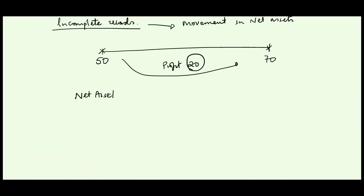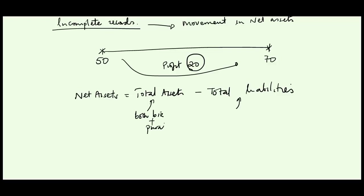Remember, net assets — as you should know from your financial reporting studies — is total assets minus total liabilities. When dealing with individuals, you list down all the assets, get the figure, then list all the liabilities, and total assets minus total liabilities gives you net assets. You then look at net assets between the two dates given, and the movement gives you your opening net profit.